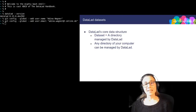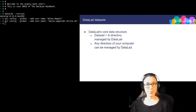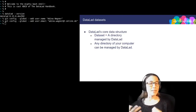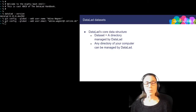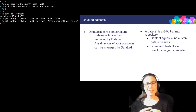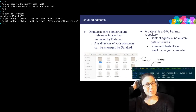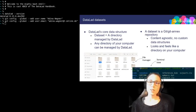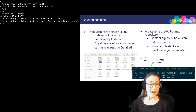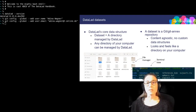Whenever you use DataLad, you will do this in what is called a dataset. A dataset is simply a directory on your computer that is managed by DataLad. And on first sight, a DataLad dataset really looks just like any other directory on your computer. Here you can see two screenshots of the same dataset, one in a file manager and one in a terminal. This may sound familiar because you experienced something similar already with Git repositories — it's just a directory where you point a software to in order to have it managed.